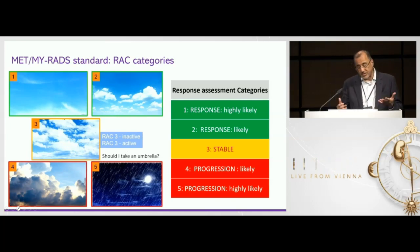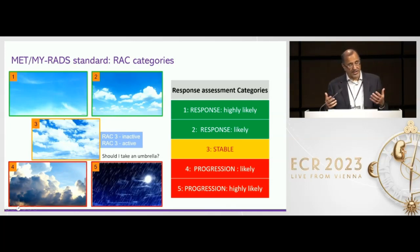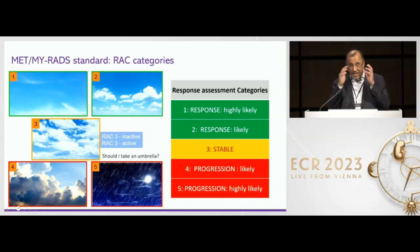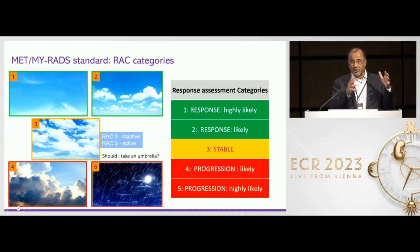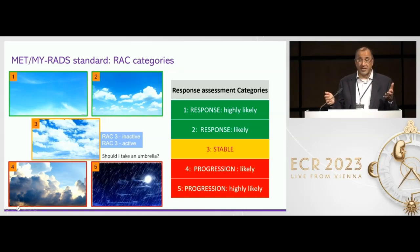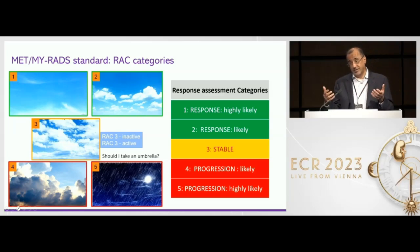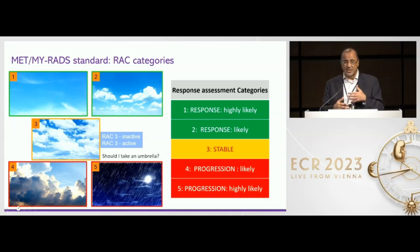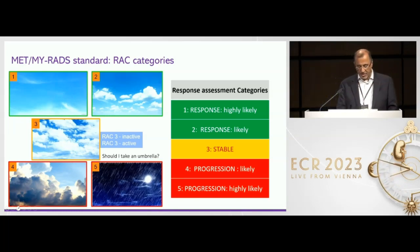It's a bit like carrying an umbrella. Do I need to change my treatment? You change your treatment for a RAC 5 — unequivocal progression. This is where you ring the bell and say it's not just a little bit of progression, this is a lot of progression, you need to do something about it. So the RAC 5 is like: should I take an umbrella or not? Should I change your treatment or not?